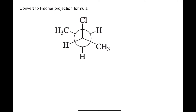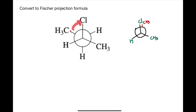So let's draw the new Newman projection formula for this molecule. We have chlorine, CH3, and NH on the front carbon. I am keeping the first carbon constant and rotating the second carbon. I have CH3, and if I rotate in this direction, the CH3 is going to be just behind Cl, this hydrogen is going to be just behind the CH3, and this hydrogen is going to be behind this hydrogen. This is the new Newman projection formula in eclipsed conformation.